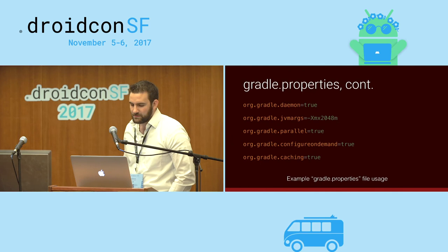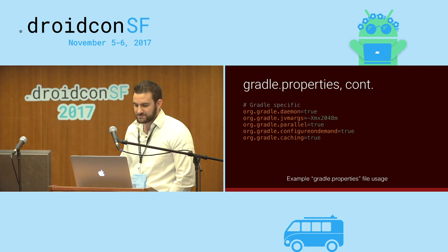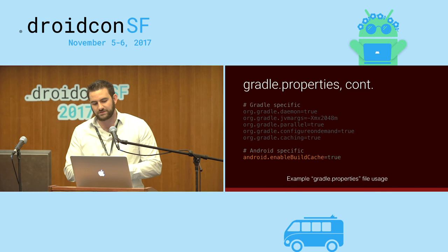Here's our Gradle.properties file that we've been building out through this entire talk. It's getting pretty big. We can squash it together and also enable the Android build cache specifically.